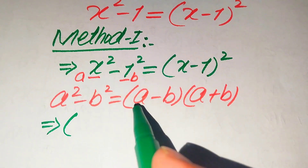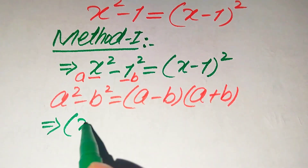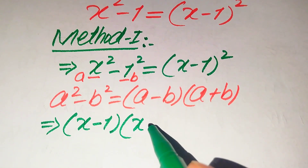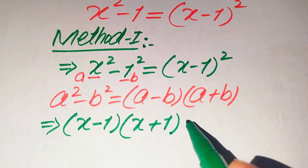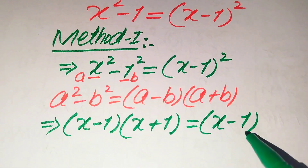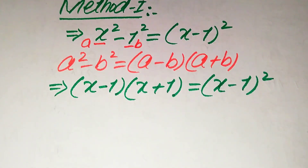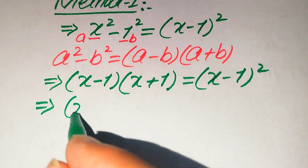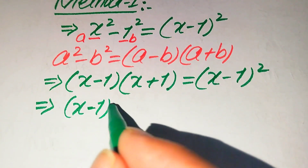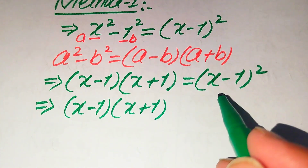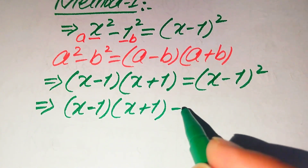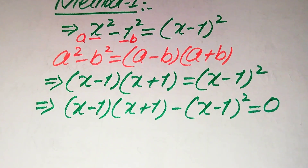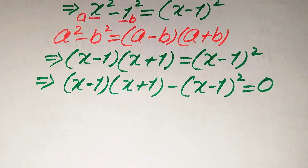So our equation is written as (a - b)(a + b), where a is x and b is 1, giving (x - 1)(x + 1), and this equals (x - 1)². Now we move the term on the right hand side to the left hand side, so it becomes (x - 1)(x + 1) minus (x - 1)² equals 0.